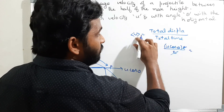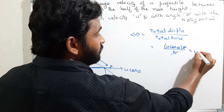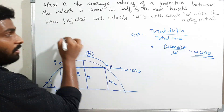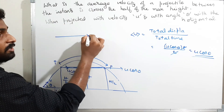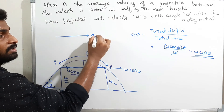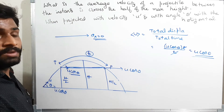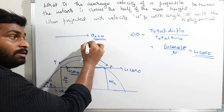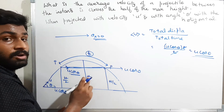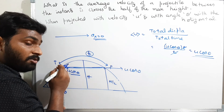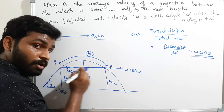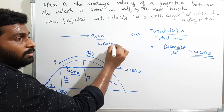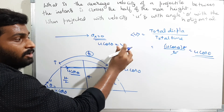Therefore, the average velocity is displacement divided by time, which gives u cos θ × T divided by T. Time T cancels, and the average velocity is simply u cos θ. In the horizontal direction, the acceleration Ax is zero. If acceleration is zero, initial velocity equals final velocity, meaning the body moves with uniform velocity u cos θ.